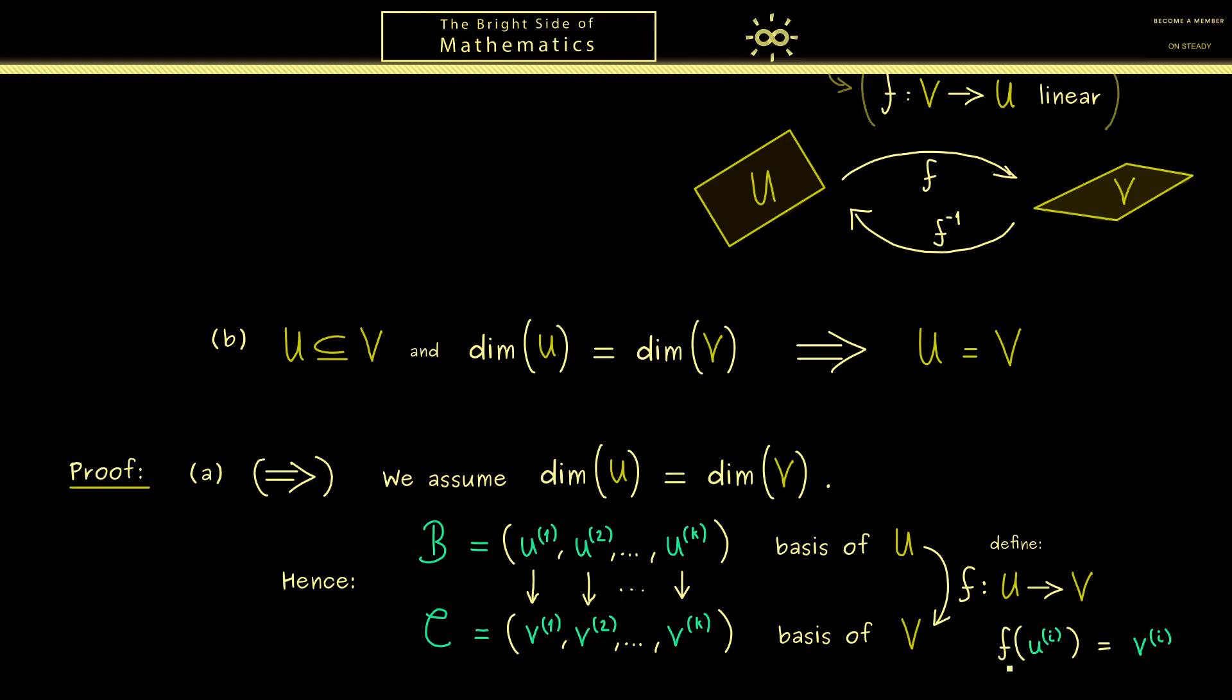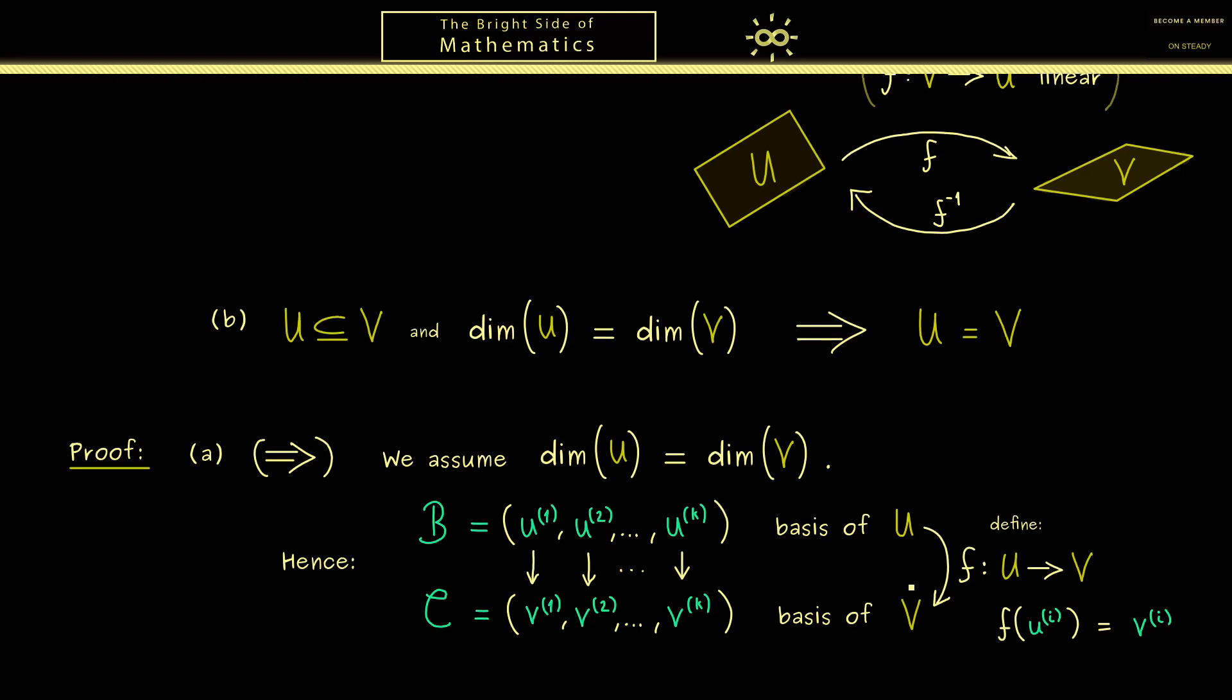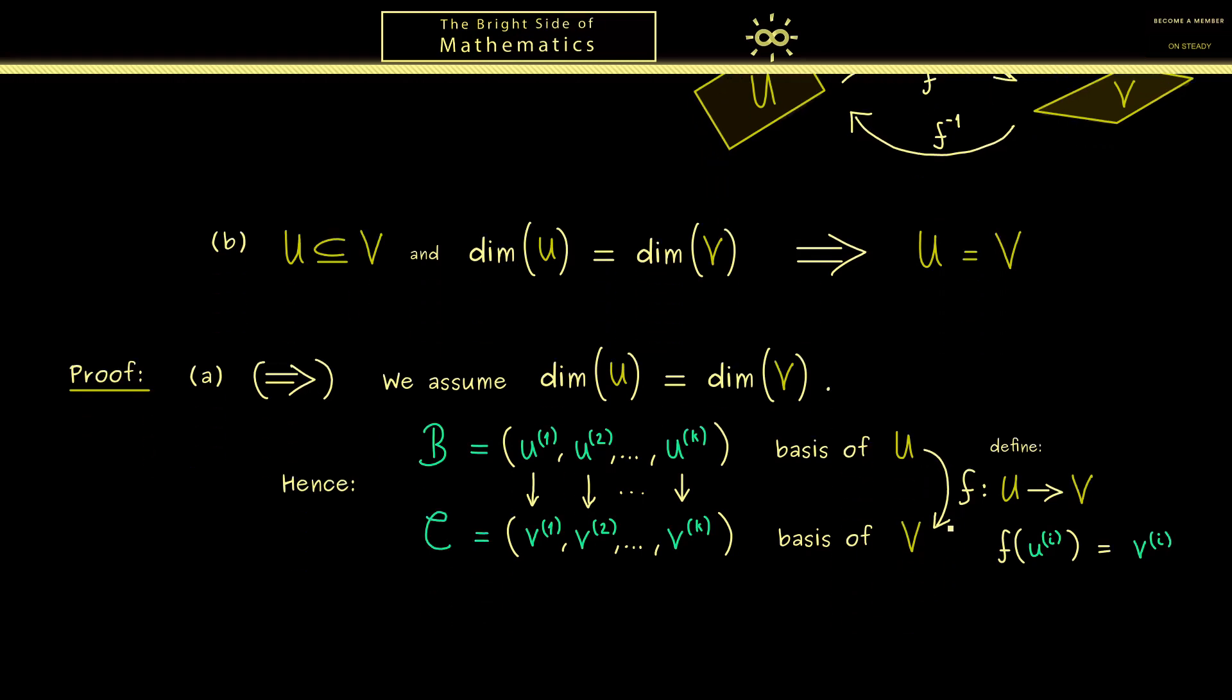Now of course this does not look like a complete definition for a map but please recall we want a linear map. So in other words we put in more information than just this information about K vectors. And indeed this is enough to completely determine the map F. So first a priori we only know what happens to the basis vectors in U. So for example they could be transformed like this.